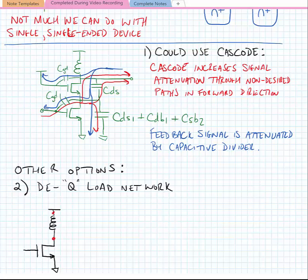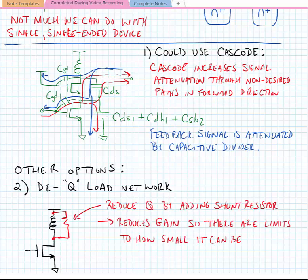We do have a couple of other options that we can use for stability. The next option is we could dequeue the load network. And we're going to do that by adding a resistor. So here we've added a resistor in parallel with the load inductor. And this reduces the quality factor of the load inductor and of the network in general. But it also reduces the gain of the amplifier. So there are limits to how small we can make this resistor.